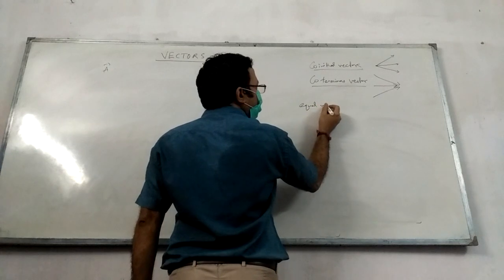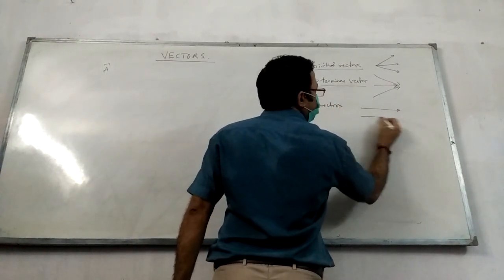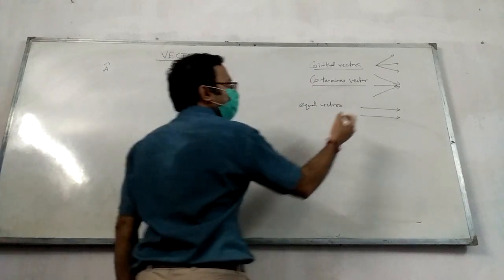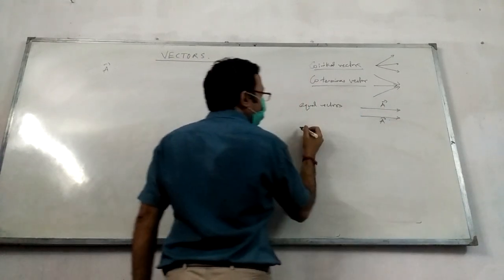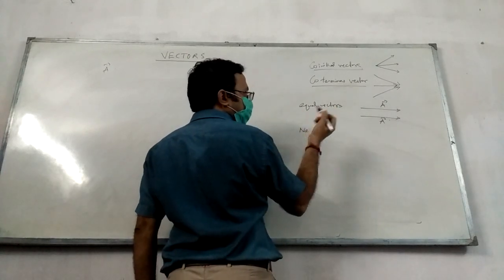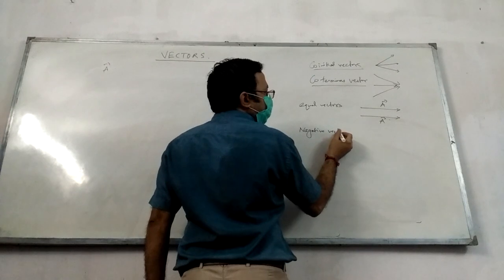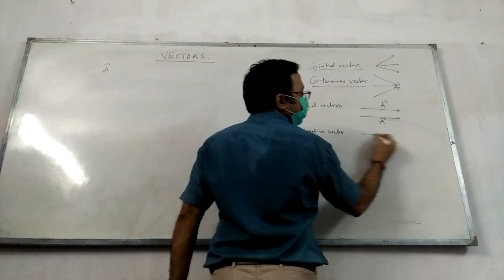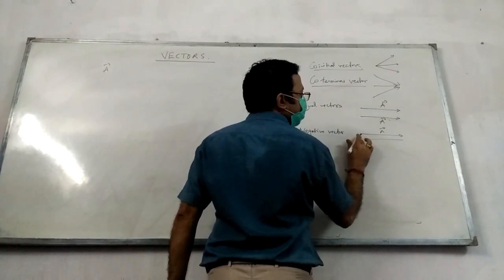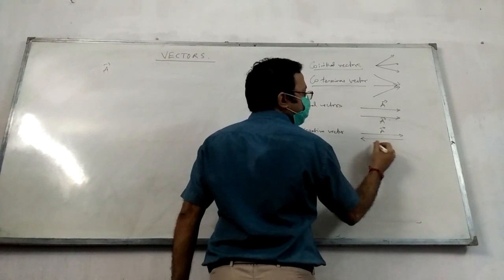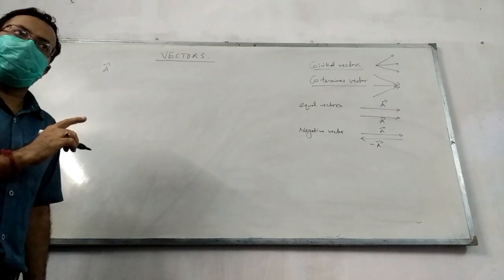Equal vectors — they are parallel. If this is vector a, then this is also vector a. Identical or equal. Negative vector: if this is vector a, then this is minus a, which is equal in length but exactly opposite in direction.